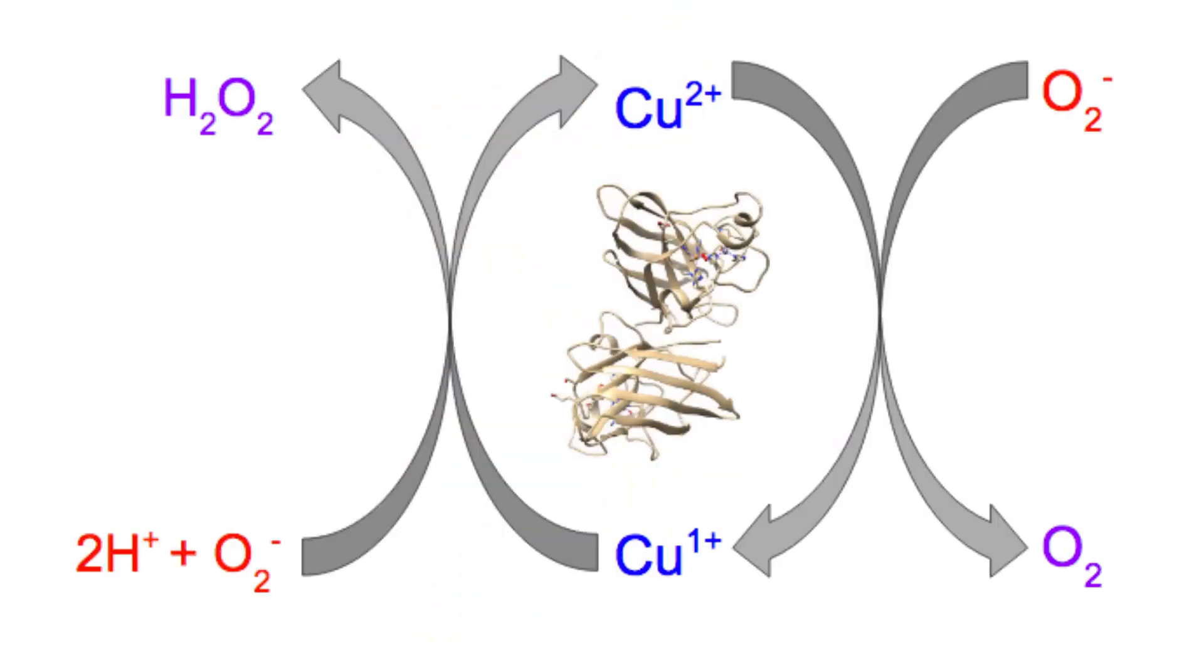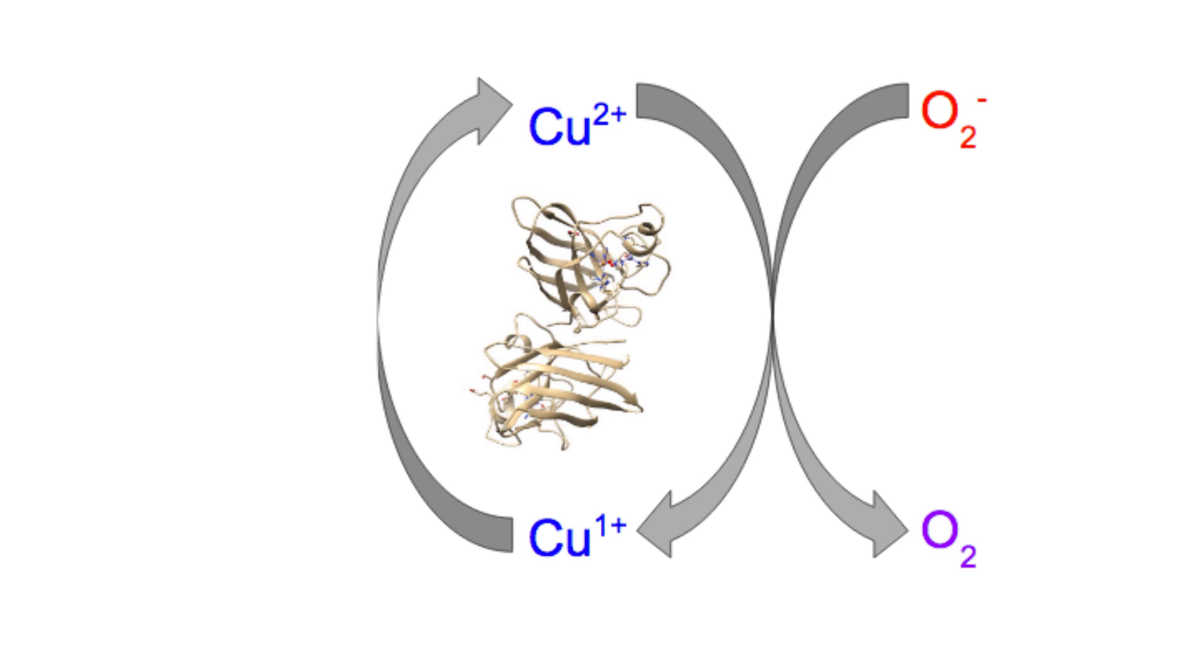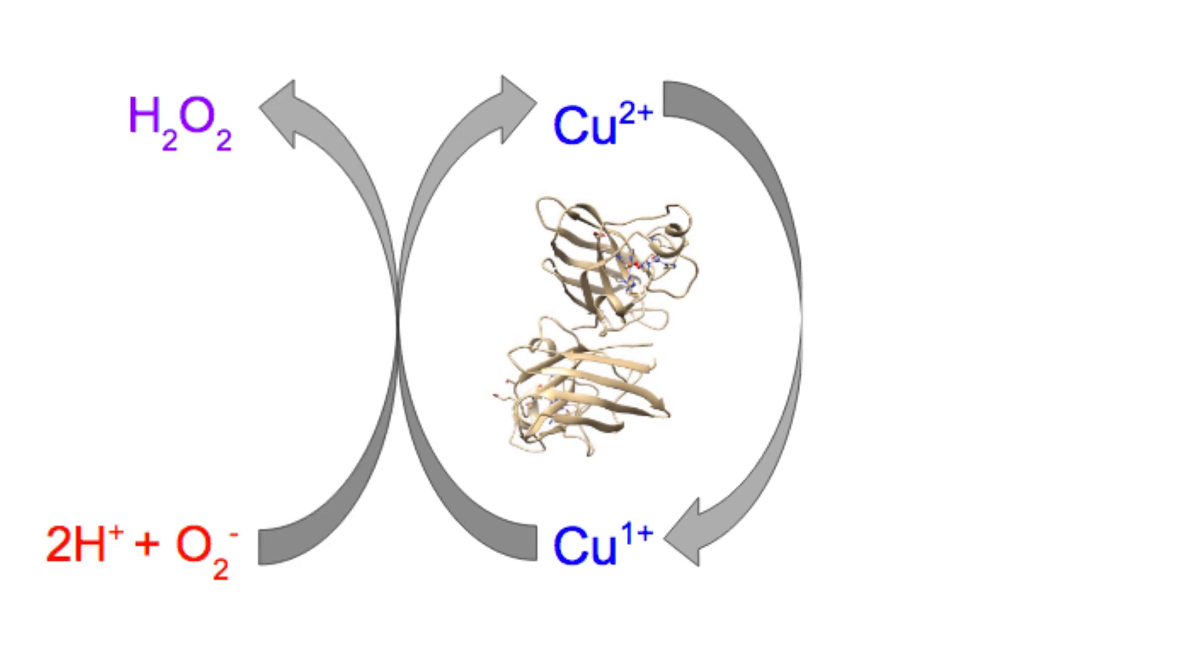This is another view of the reaction catalyzed by superoxide dismutase. This cycle consists of two different redox reactions. On the right the superoxide is oxidized to dioxygen while the copper is reduced from an oxidation state of 2 to 1. This happens by direct coordination of copper 2 to superoxide and the redox reaction occurs inner sphere. Then on the left the superoxide is reduced to hydrogen peroxide while the copper is oxidized back to an oxidation state of 2.